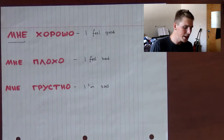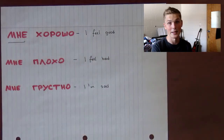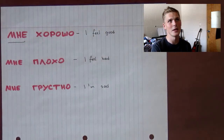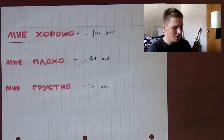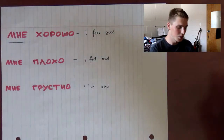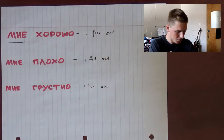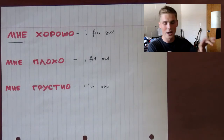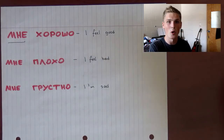The last one is МНЕ грустно — I am sad. Literally 'it is sad to me,' but for it to make sense we say I am sad. As you notice, there is no male or female form — it's the same for masculine or feminine. So whether you're a guy or a girl, you can just say МНЕ хорошо, МНЕ плохо, or МНЕ грустно.